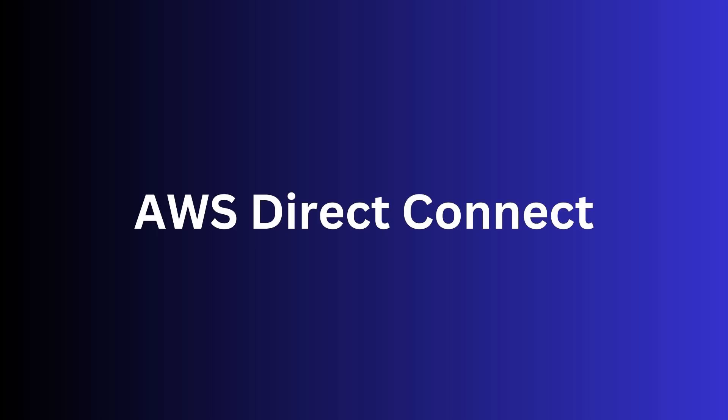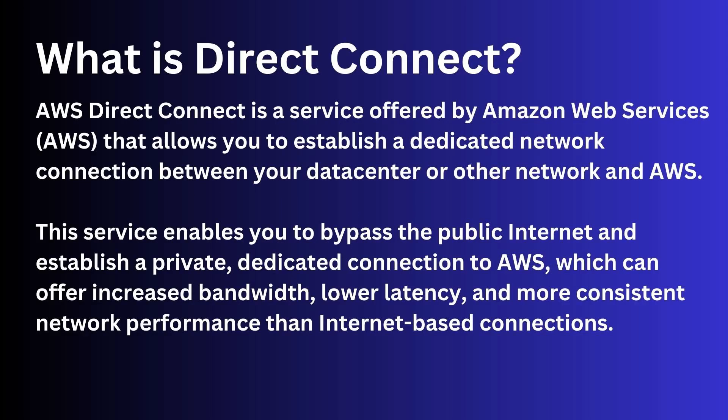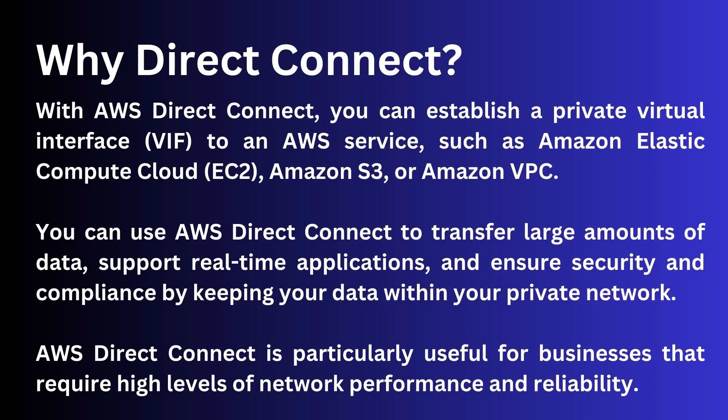Welcome to Web Dev Cloud. Today we are going to look at AWS Direct Connect. AWS Direct Connect is a service offered by Amazon Web Services that allows you to establish a dedicated network connection between your data center or other network and AWS. This service enables you to bypass the public internet and establish a private dedicated connection to AWS, which can offer increased bandwidth, lower latency, and more consistent network performance than internet-based connections.